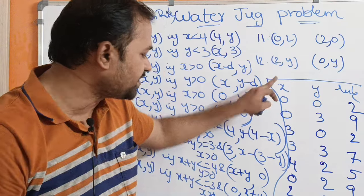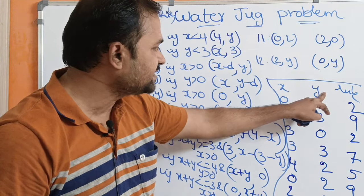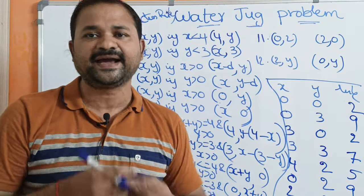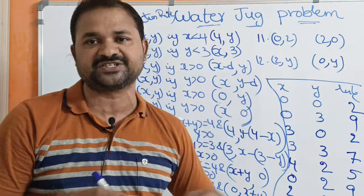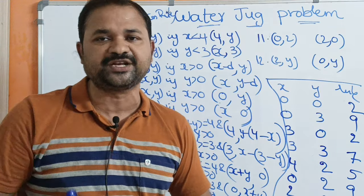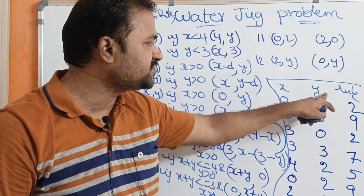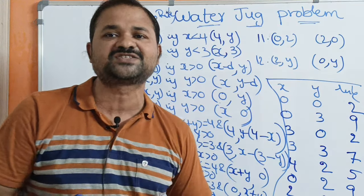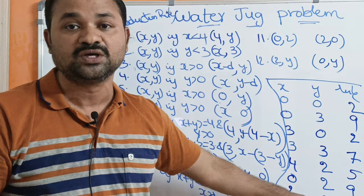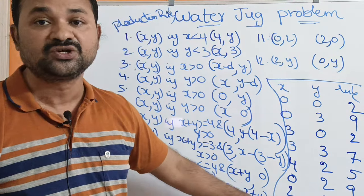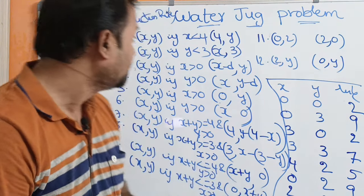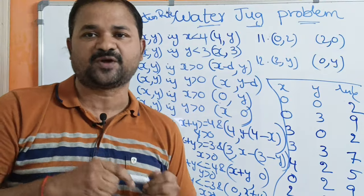State (2, 0) is our solution: the 4-liter jug contains 2 liters of water and the 3-liter jug contains 0 liters. The possible values of x (4-liter jug) are 0, 1, 2, 3, 4, and for y (3-liter jug) are 0, 1, 2, 3. In this way, we can solve the water jug problem using production rules and state space search.